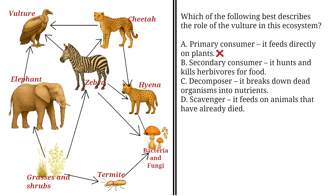B: Secondary consumer — it hunts and kills herbivores for food. This is incorrect. Even though the vulture eats herbivores, it does not hunt and kill them. This is because herbivores like the elephant and zebra are much bigger and stronger than the vulture, so the vulture can only eat them when they're dead.